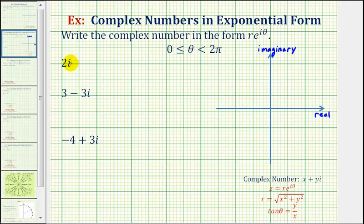We want to write complex numbers in Cartesian form in exponential form, with the form r times e raised to the power of i theta. We also want theta to be in a specified interval, so we want to find r and theta. We can use formulas if needed, but many times if we plot the point on the complex coordinate plane, we can find some of the information we need.